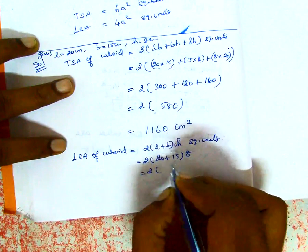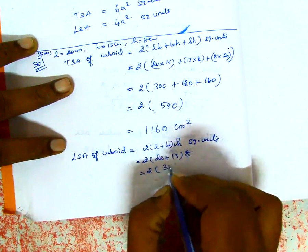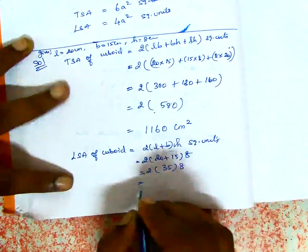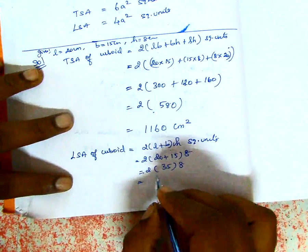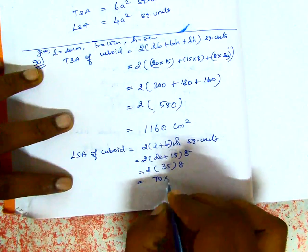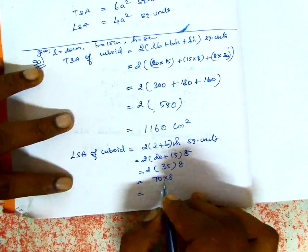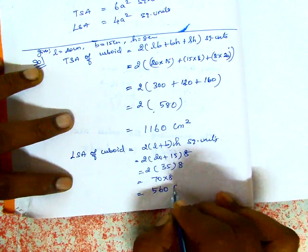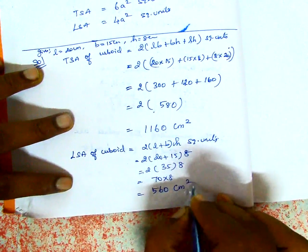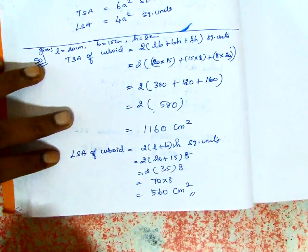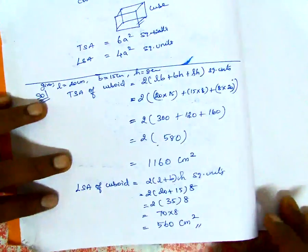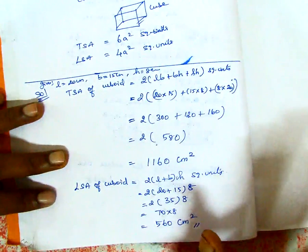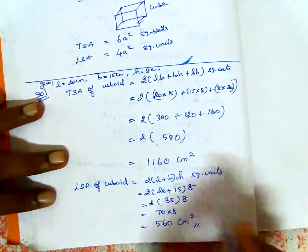Now for the LSA of the cuboid, the formula is: 2 into (L + B) into H. Adding length and breadth: 20 + 15 = 35. Then 2 × 35 = 70. Finally, 70 × 8 = 560 cm². So the LSA of the cuboid is 560 cm².